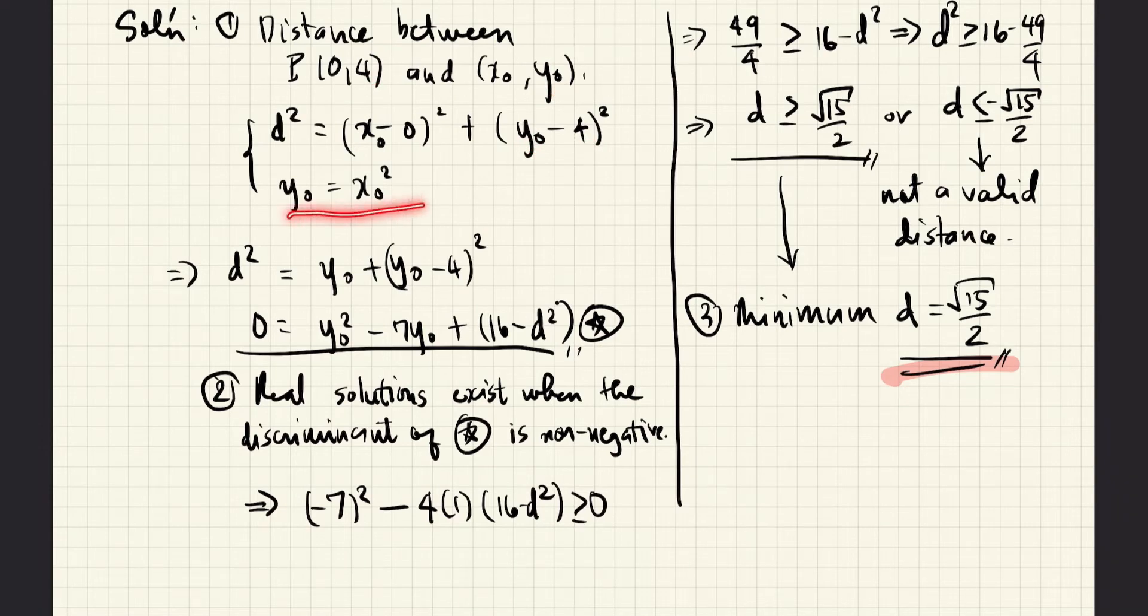And then, we write this equation which stems from the fact that (x₀, y₀) lies on the parabola y equals x squared. Then, we notice that this bit is x squared and so we can replace that with this. We do that so that now we will have only y sub 0 and d. The equation now becomes like this. Let's call that equation star.